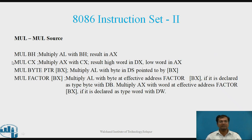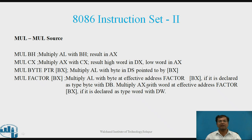The third type is Multiplication. Syntax: MUL Source. Example: MUL BH — multiplies AL with BH; result stored in AX. MUL CX — multiplies AX with CX; high word in DX and low word in AX. MUL BYTE PTR [BX] — multiplies AL with byte at DS offset pointed to by BX. MUL FACTOR[BX] — if declared as BYTE type with DB, multiplies AL; if declared as WORD type with DW, multiplies AX with word at effective address FACTOR+BX.